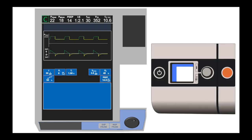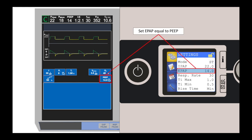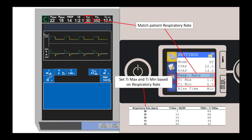On the VPAP-ST, in order to enter clinical mode to input your settings, hold down the double check button and the selection knob together for three seconds. This will open a screen that allows selection of the appropriate settings. Regardless of what mode the patient starts in, the mode on the VPAP-ST should be set to ST. The EPAP, or expiratory positive airway pressure, should be set equal to the PEEP on the conventional mechanical ventilator. The respiratory rate can be set to match the patient's respiratory rate, and TI-max and TI-min should be adjusted according to the table available in the guidelines.